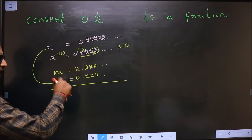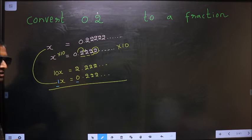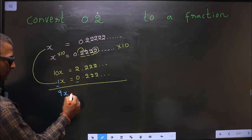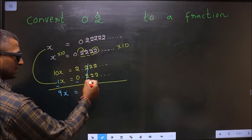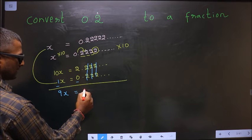Now, subtract these two. Okay, subtract these two. So, 10x minus 1x is 9x. And on this side, this will make it 0. So, we are left with 2 minus 0, which is 2.